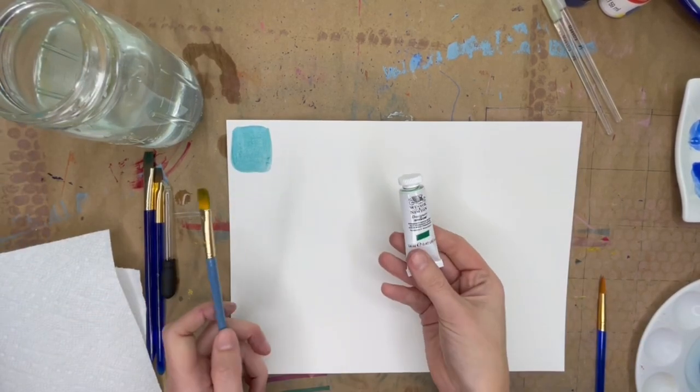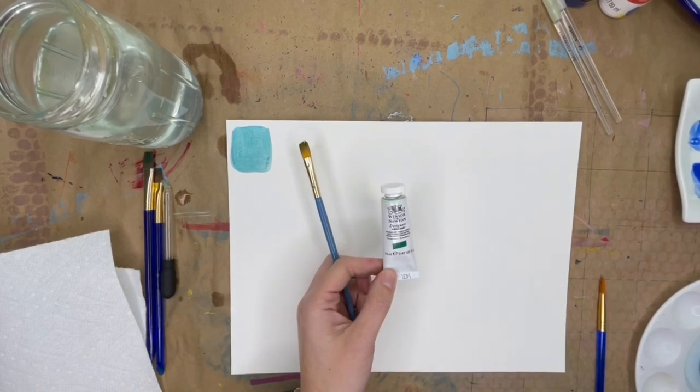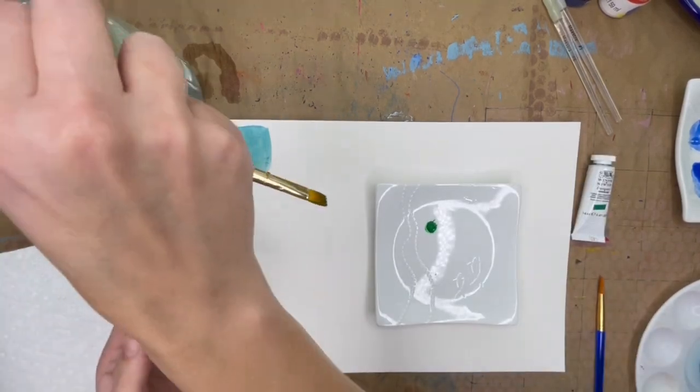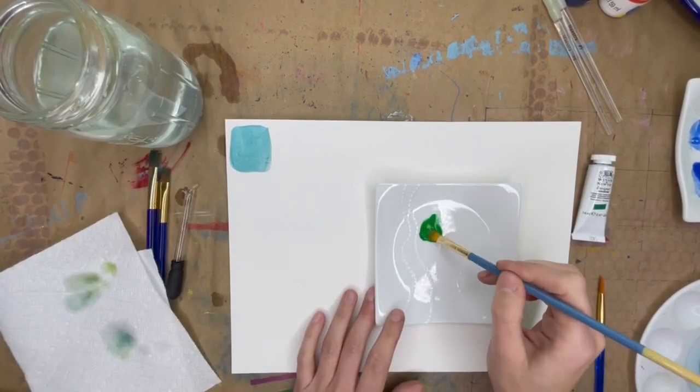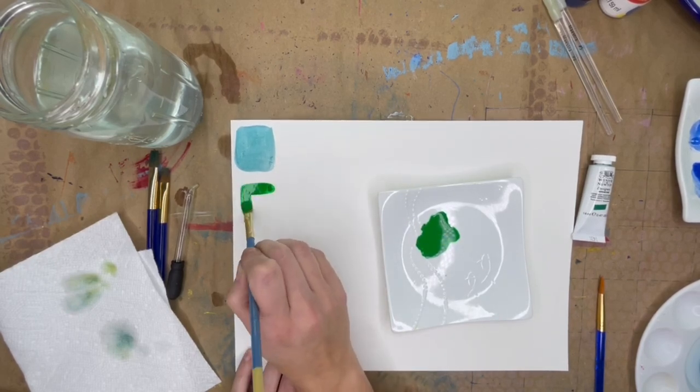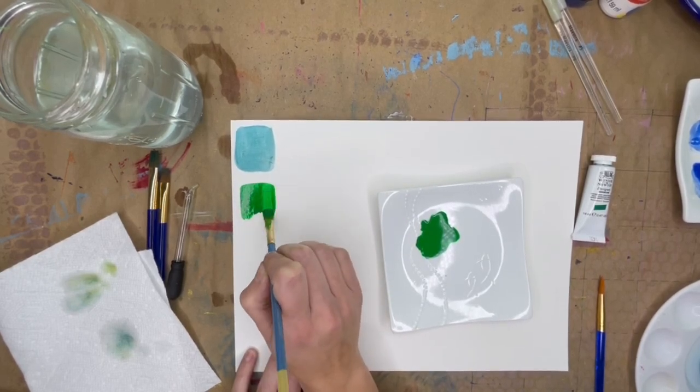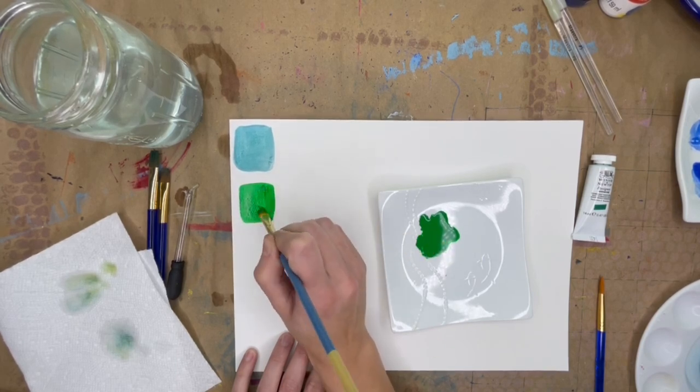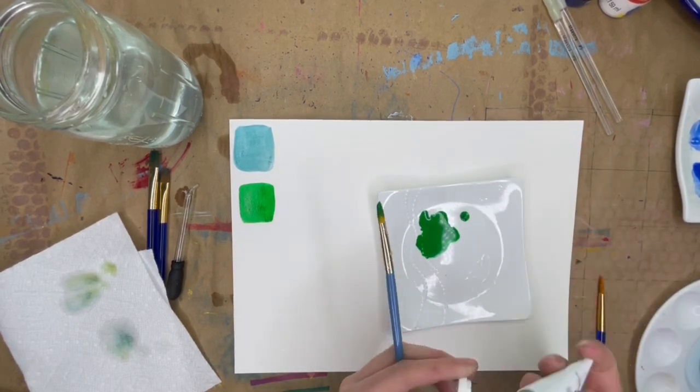I like to think of gouache paint as being in between watercolor and acrylic. Gouache is more opaque in color than watercolor and dries quicker, and you can paint really fine details. Generally, there are two types of gouache: traditional, which can be reactivated with water if you need to make changes, and acrylic gouache, which doesn't need water and cannot be reactivated when dry.